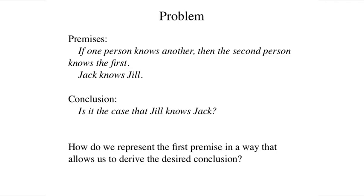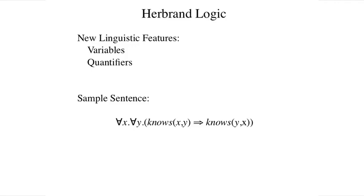Herbrand logic is an extension of propositional logic that solves this problem. The trick is to augment our language with two new linguistic features, namely variables and quantifiers. With these new features, we can express information about multiple objects without explicitly enumerating those objects, and we can express the existence of objects that satisfy specified conditions without saying which objects they are.